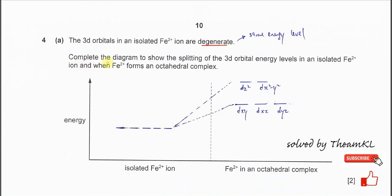Complete the diagram to show the splitting of 3d orbital energy levels in an isolated Fe²⁺ and when the Fe²⁺ forms an octahedral complex. These degenerate orbitals will later form two sets of non-degenerate orbitals because the ligands bond with this ion, causing some orbitals to move higher and some to move lower.